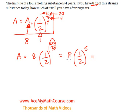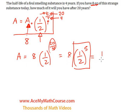One super common mistake here is to multiply the 8 and the half and get 4 to the power of 5 — that would be super wrong. Please never do that. We need to do the exponent first. So, half to the power of 5, times 8, will give us precisely a quarter of an ounce.